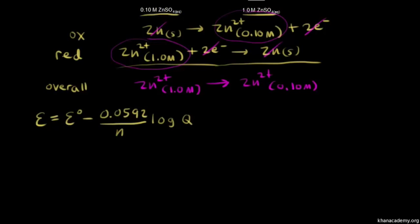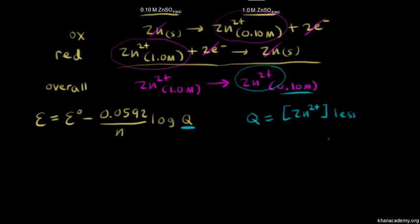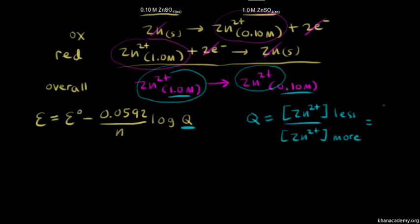Let's think about Q. What would Q be for our concentration cell? Q equals the concentration of Zn²⁺ on the less concentrated side over the concentration of Zn²⁺ on the more concentrated side. Right now that's 0.10 over 1.0.